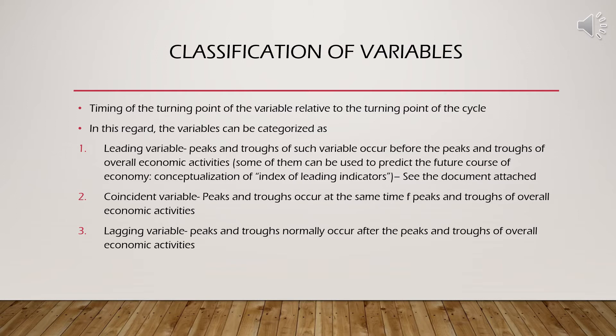The second type is the coincident variable. These variables change along with the pace of overall economic activities — they maintain a particular pace with the business cycle. Whenever there is a peak in the economy, the value of these variables is also at peak. Whenever there is a downturn, the value falls in the same direction and at the same speed. These are called coincident variables.